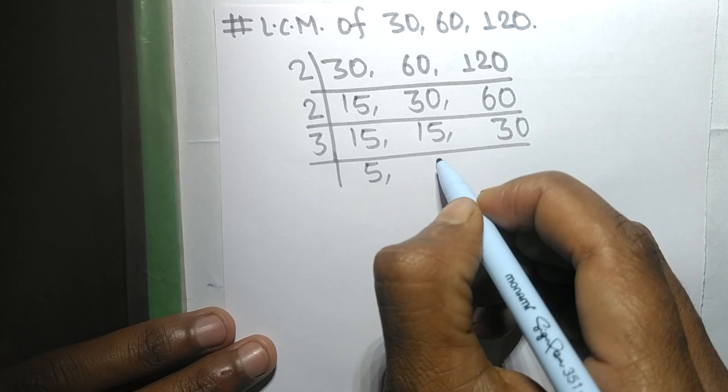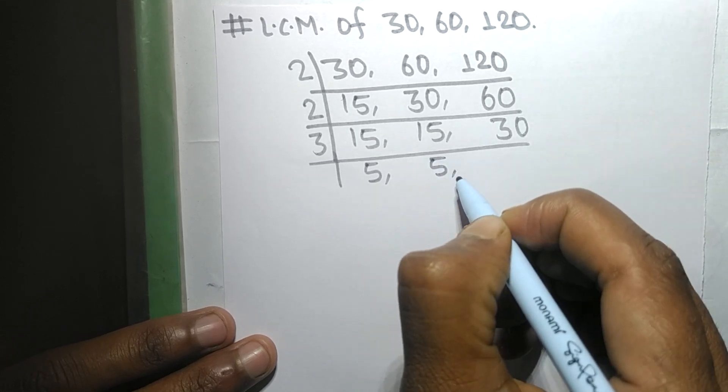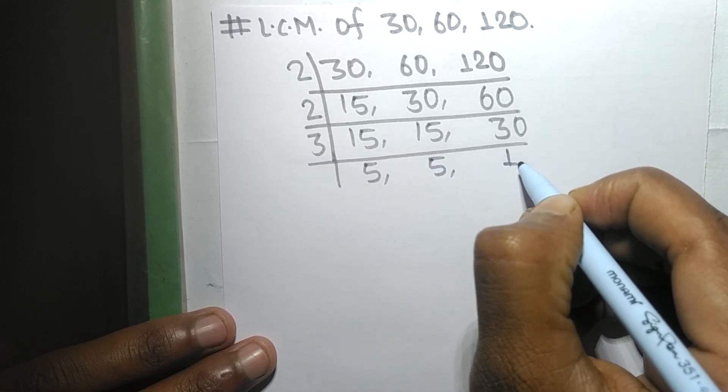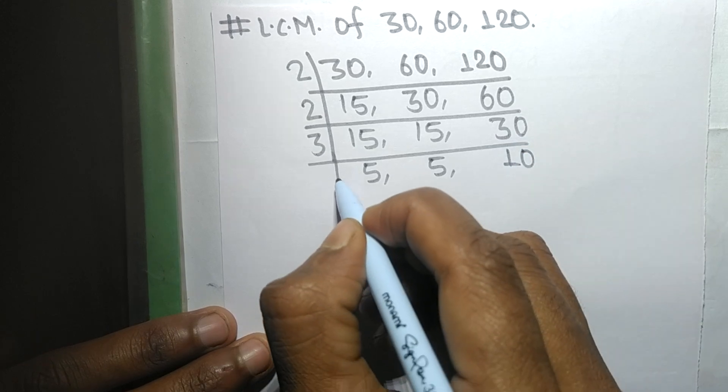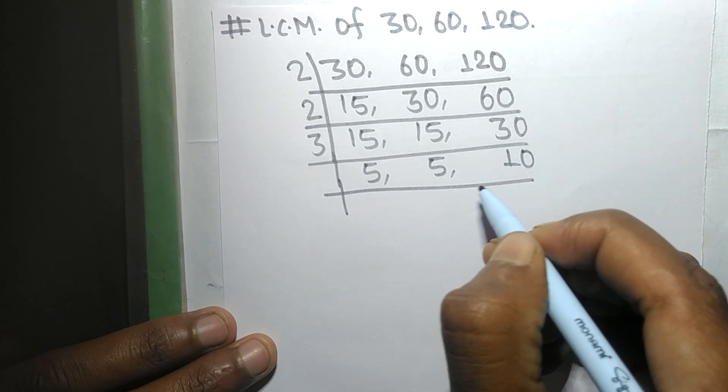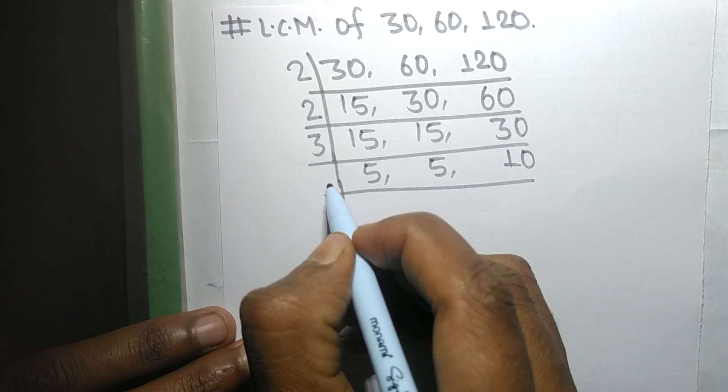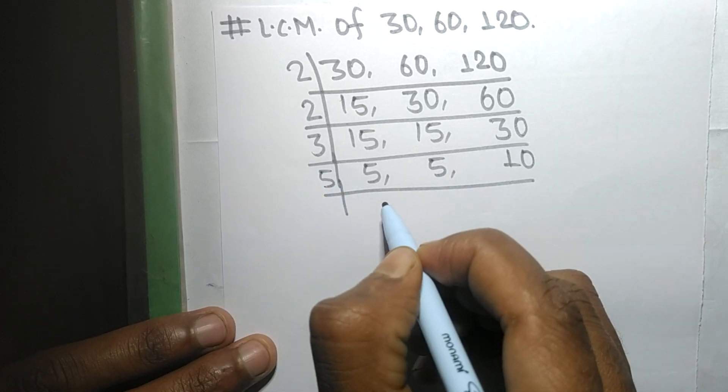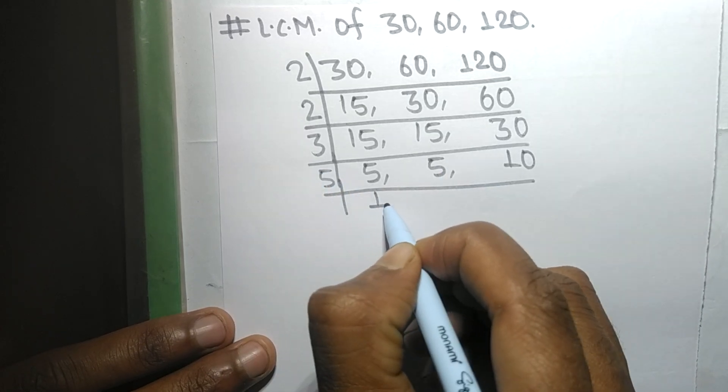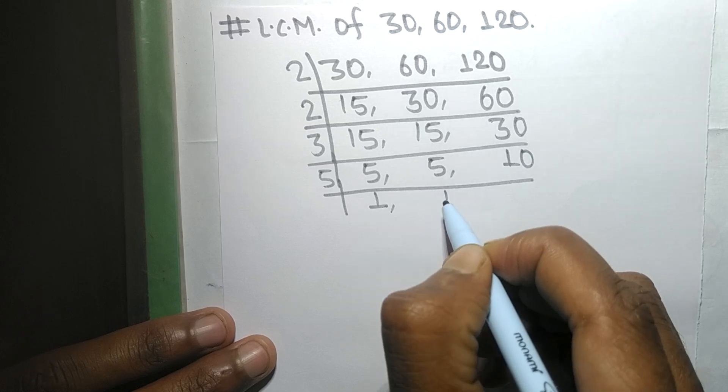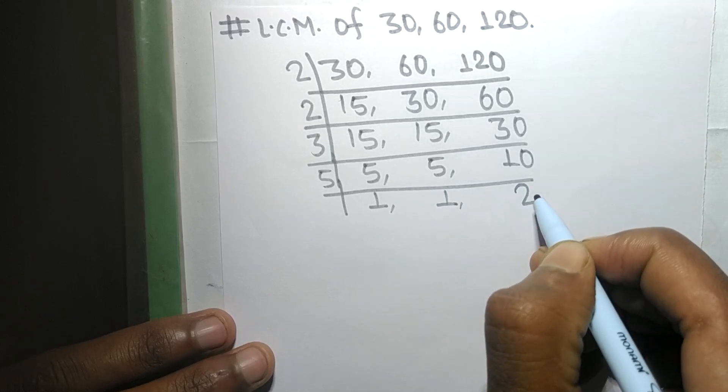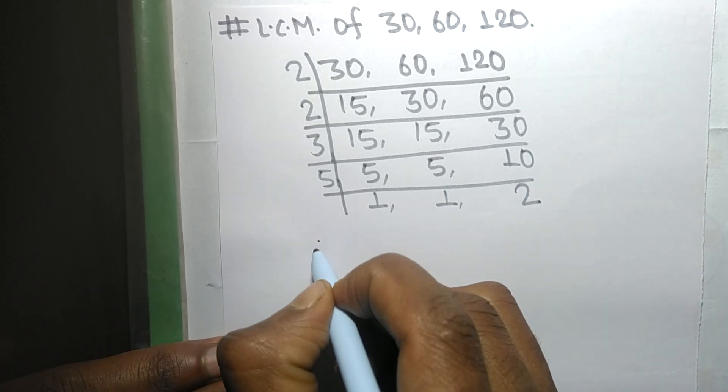Again, these all numbers are exactly divisible by 5, so 5 times 1 means 5, 5 times 1 means 5, 5 times 2 means 10.